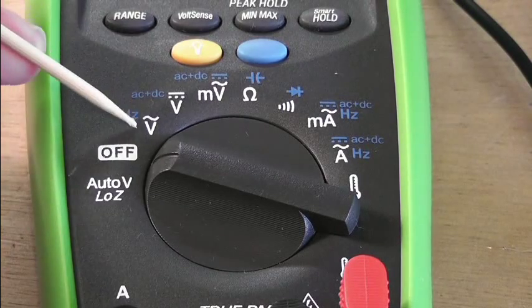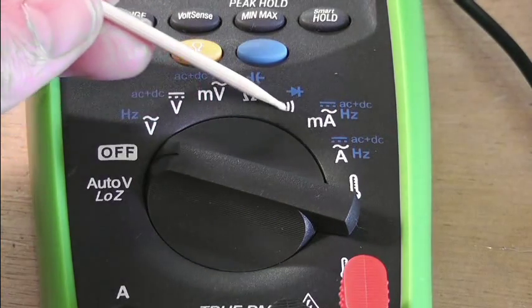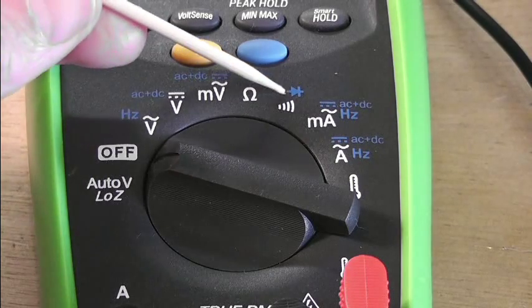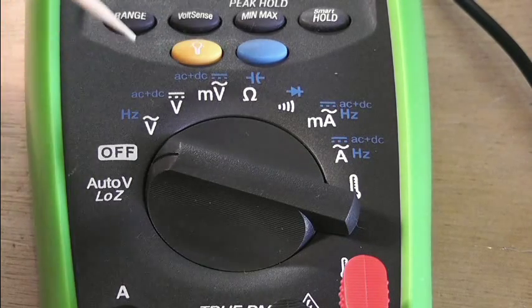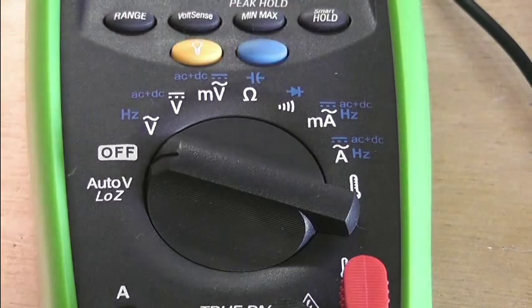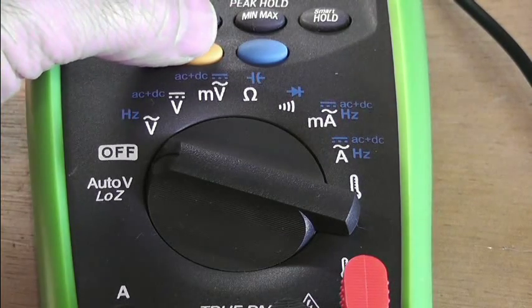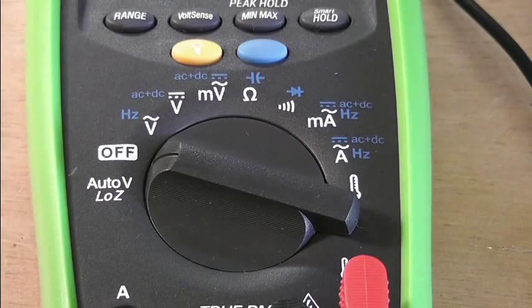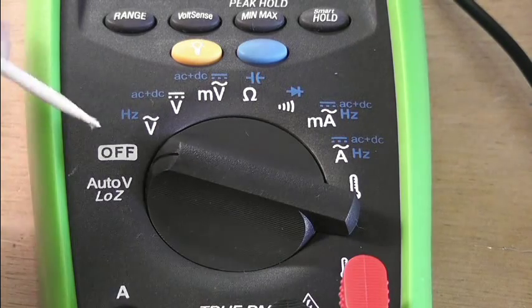So on the main dial you've got two sets of markings, white ones and blue ones. The blue ones are the alternative functions and to access the alternative functions you press the blue button here. The yellow button here is a backlight. I'll demonstrate that in a minute, though I haven't got the meter switched on yet.